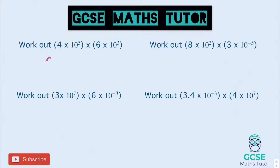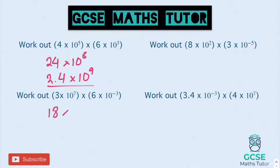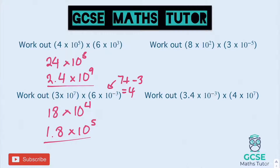First: 4 times 6 is 24, times 10 to the power of 5 plus 3 equals 8. Writing in standard form: 2.4 times 10 to the 9. Second: 3 times 6 is 18, times 10 to the power of 7 add negative 3 equals 4. Making the number one jump smaller gives 1.8, making the power one jump bigger gives 5. So 1.8 times 10 to the 5.